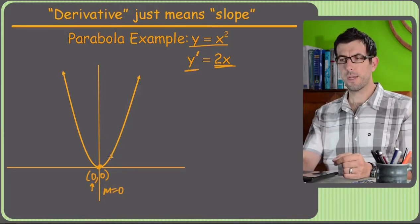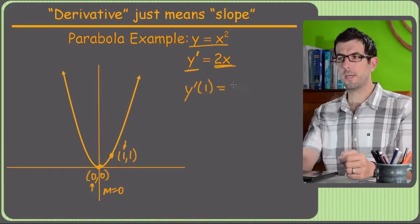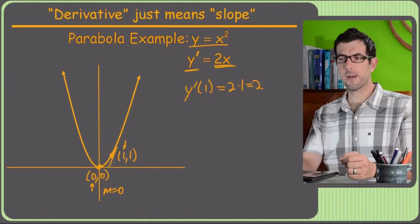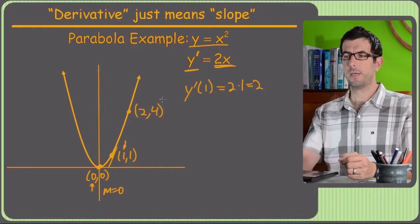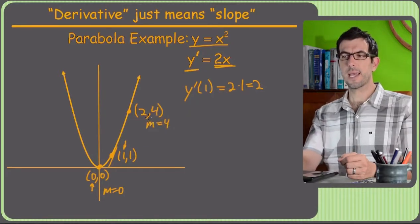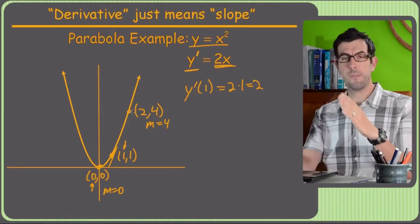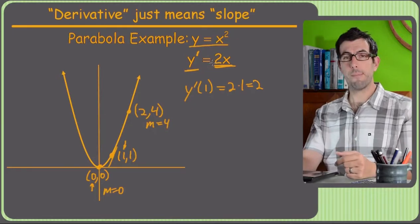Let's try the point (1, 1), another point the parabola goes through. The x-coordinate is 1, so plugging in 1: y prime of 1 is 2 times 1, which equals 2. The slope was actually 2 at that point — and that's what I estimated. Let's try the point (2, 4). Plugging in 2 for x, we get a slope of 4. This thing has a pretty steep slope already at x equals 2. And of course, as x gets bigger and bigger, the slope gets steeper and steeper — which is pretty much what you'd expect on a parabola.